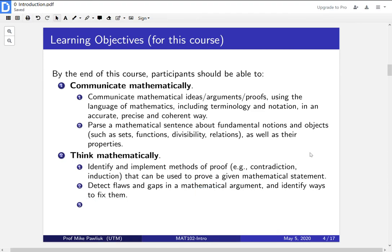Second thing is by the end of this course, you should be able to detect flaws and gaps in a mathematical argument and identify ways to fix them. So writing proofs isn't just writing proofs on your own. It's also being able to evaluate arguments. So this will be someone else's argument. Someone will say, hey, what do you think about this proof I gave? And you should be able to say, ah, well, I don't really understand what's going on at this step. I don't really understand what's going on here. This part is false.